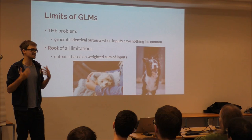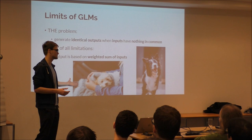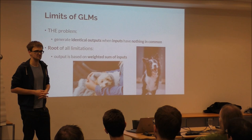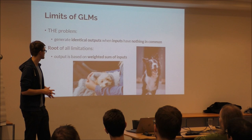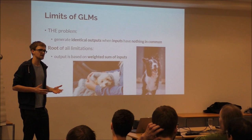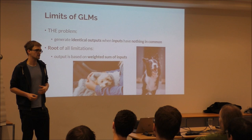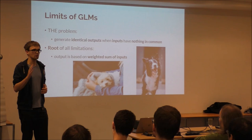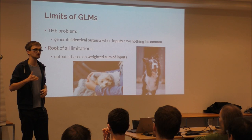So what are the limits of GLMs? The problem is when you want to have identical outputs for inputs that have nothing in common. All these models are based on a weighted sum of the inputs, which means the model for credit scoring cannot understand that very low age is bad and very high age is also bad. You probably don't want to loan money to an 18-year-old or a 90-year-old — there's a golden middle — but the model doesn't understand this because it has one coefficient and either age is something good or bad.